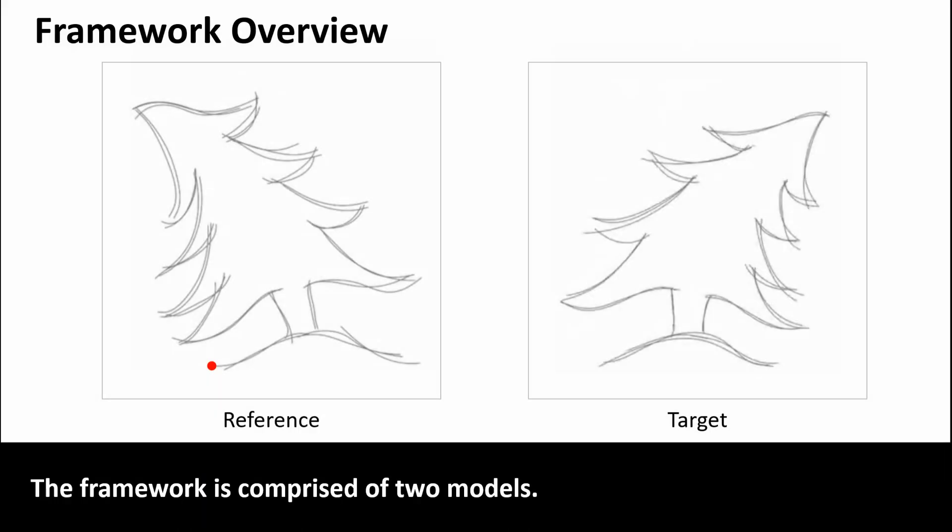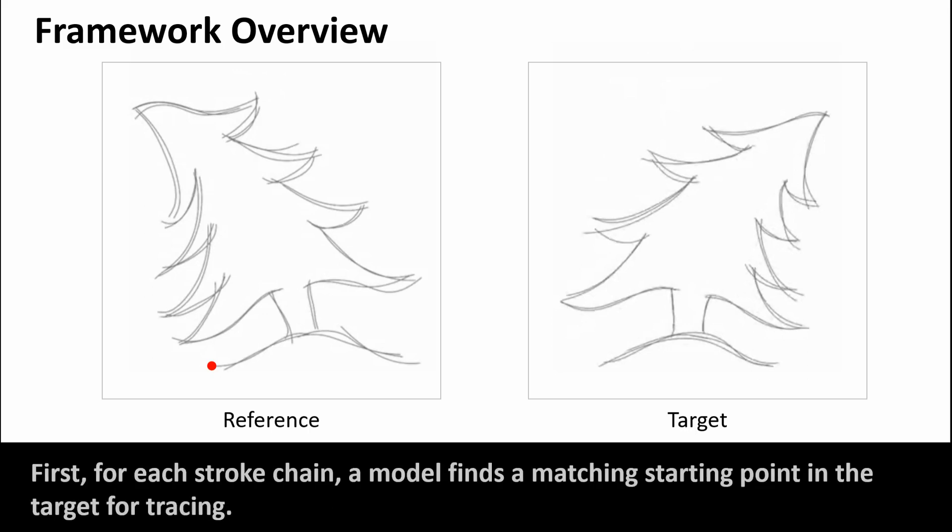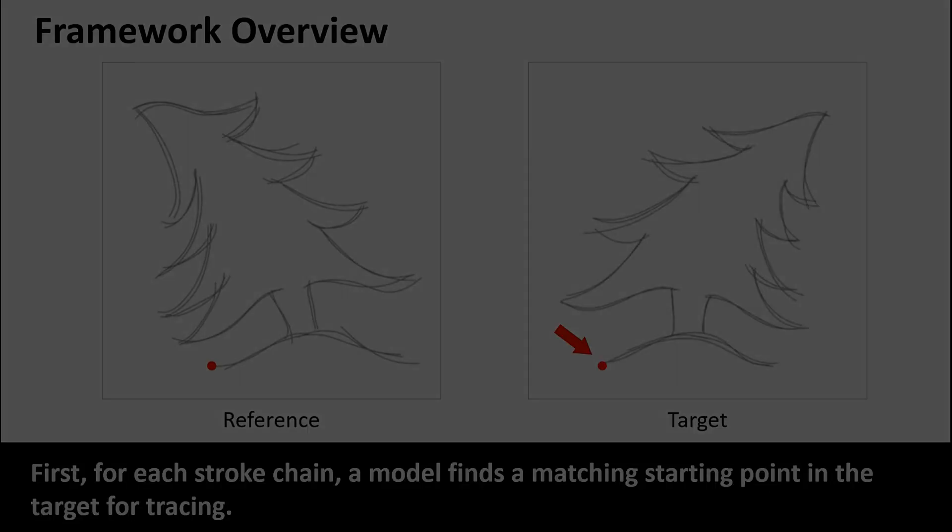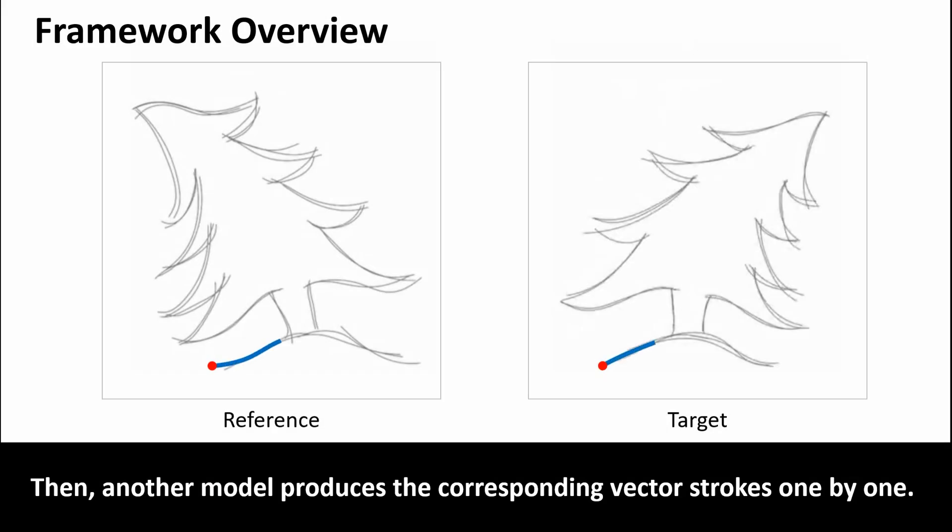The framework is comprised of two models. First, for each stroke chain, the model finds a matching starting point in the target for tracing. Then, another model produces the corresponding vector strokes one-by-one.